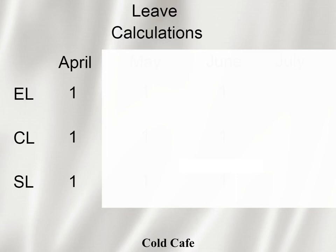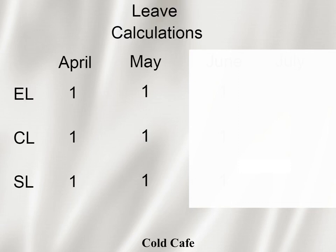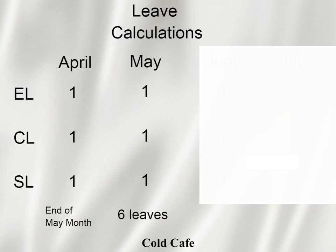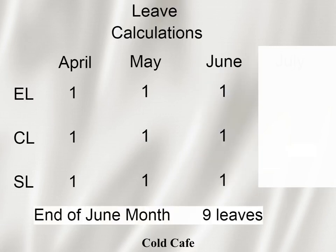If I didn't take any leave in April, those three leaves carry forward to the next month. For example, in April I didn't take any leave, so the casual leave, earned leave, and sick leave — one each — carry forward to May. In May the company again allots three more leaves — casual one, earned one, sick one. So now in my leave balance I have two of each: casual leave two, earned leave two, sick leave two.